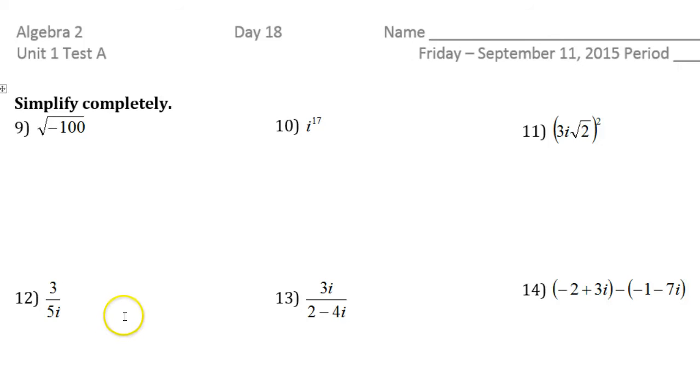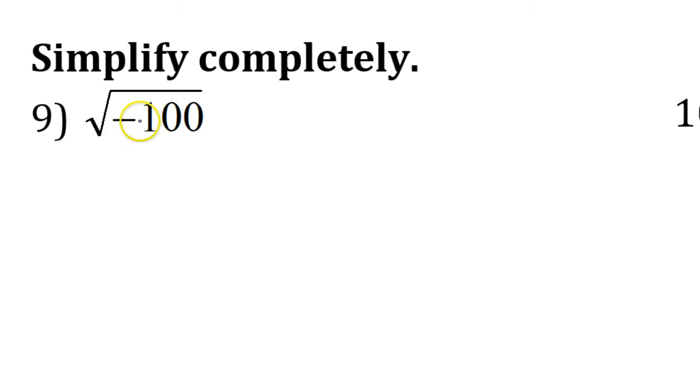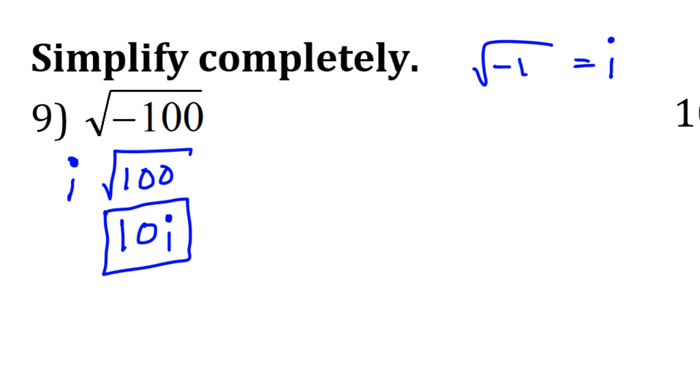In this video we are going to practice simplifying expressions involving complex numbers and specifically imaginary numbers. When you see a negative underneath a radical, a square root, the first thing you should do is understand that this is going to give us i because we know that the square root of negative one is defined as the imaginary unit i. So the first thing you should do is take that negative out and make it i. So that's i and then square root of 100. The square root of 100 is 10, so we are going to have 10 and then the i goes over here on the right. So 10i.